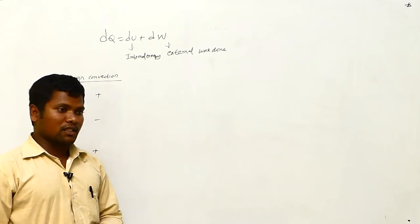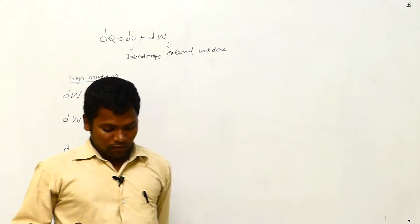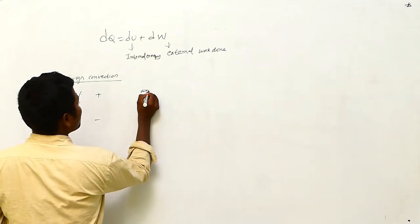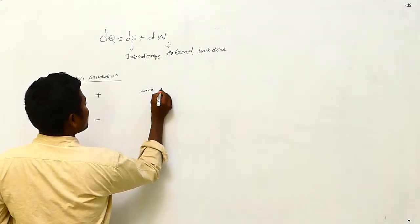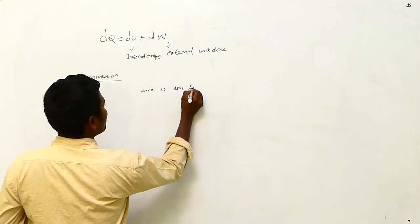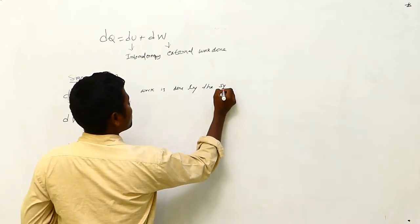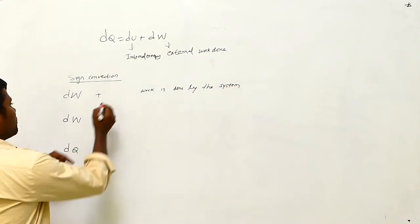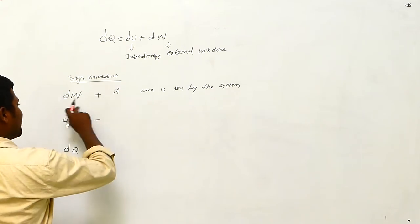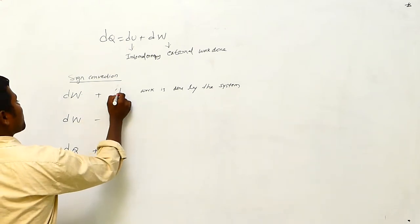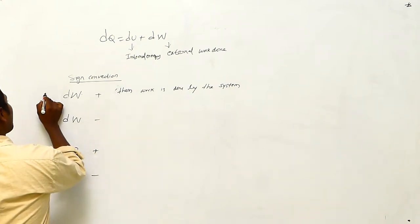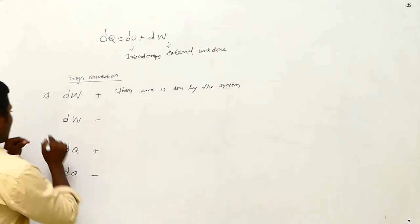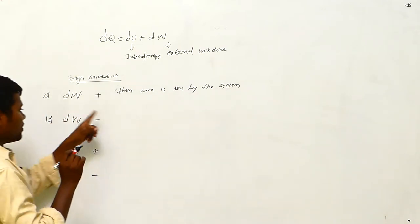If dW is positive, that means work is done by the system. If dW is negative, that means work is done on the system. Remember these prepositions: positive means done by, negative means done on.